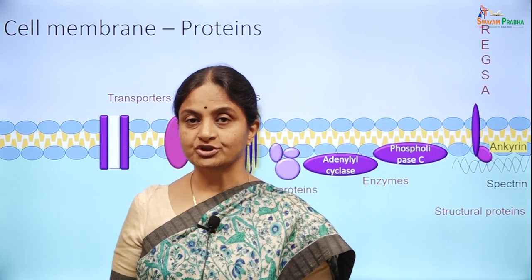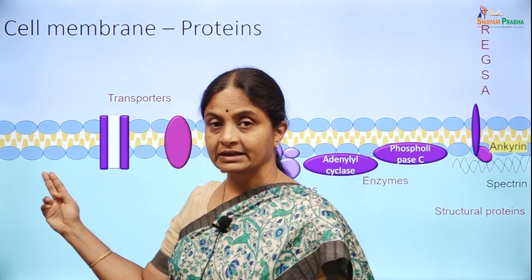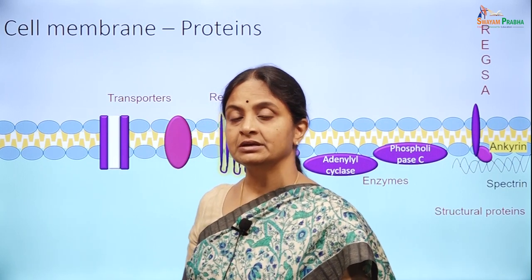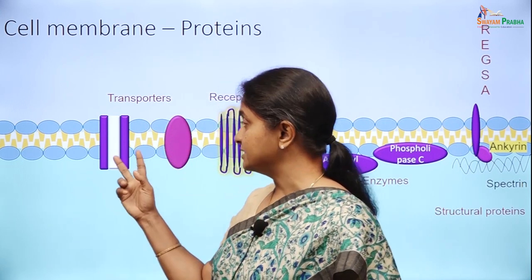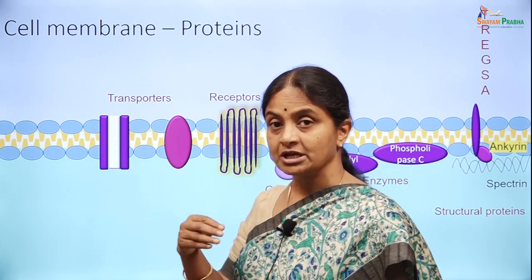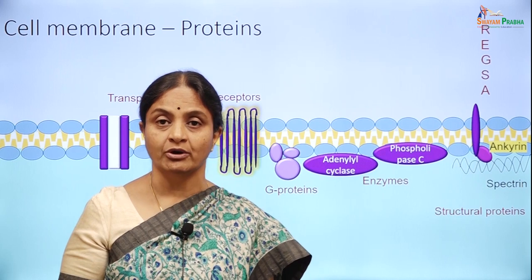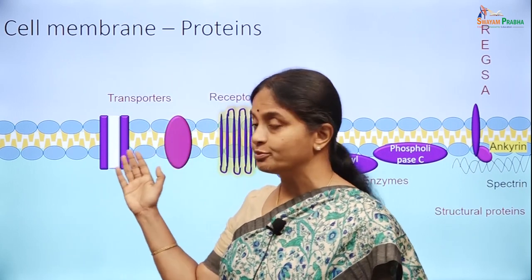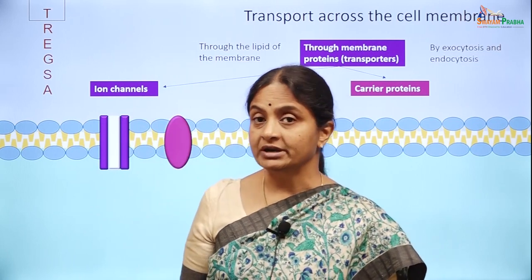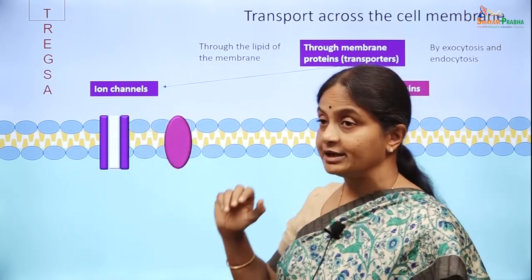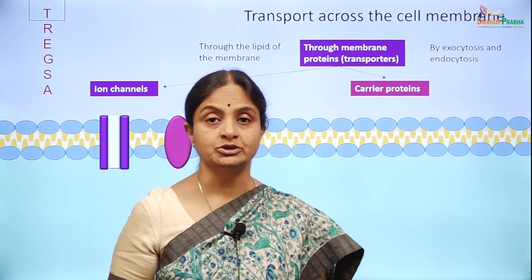When we consider transport processes across the cell membrane, transport can occur through simple diffusion via the lipid film, and that can be true only for lipid soluble substances. Whereas polar or hydrophilic substances require the assistance of membrane proteins called transporters to take them past the membrane without seeing the lipid. A third transport process is exocytosis or endocytosis. We are right now concerned with transport proteins on the cell membrane.